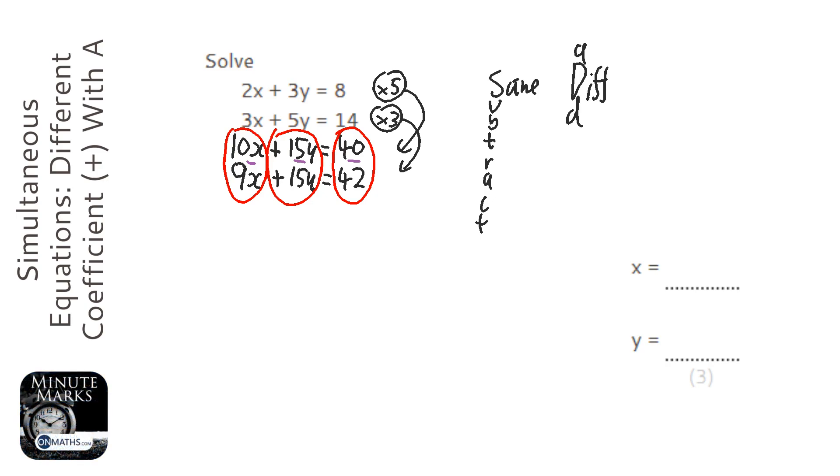And so we've got 10x take away 9x, which is just x, 15y take away 15y is nothing, which is good because we need it to be, 40 take away 42 is minus 2. So we've got one of our answers.